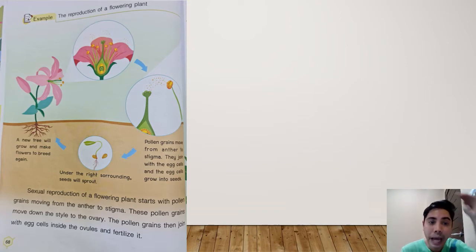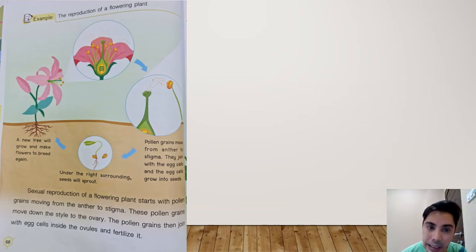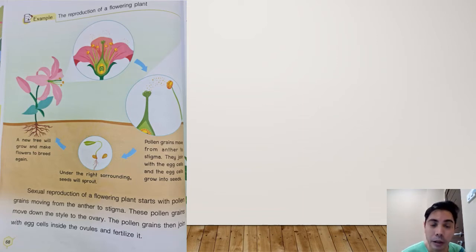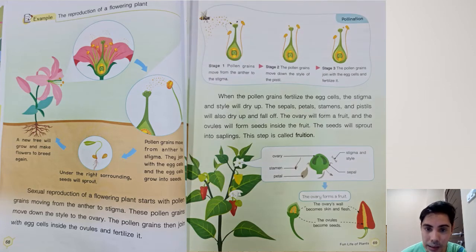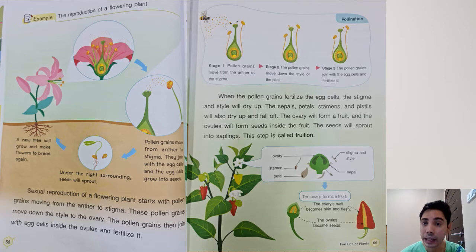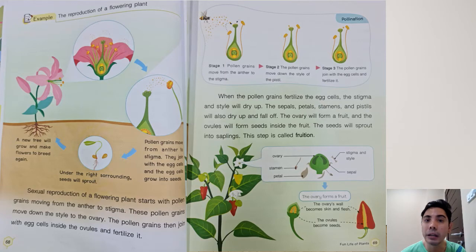These pollen grains move down to the style, to the ovary of the plant, and the pollen grains will then join with an egg cell. That egg cell inside the tummy of the flower will fertilize it to make it into a new plant. When the pollen grains fertilize the egg cells, the stigma and style will dry up, and the parts of the flower — the sepals, petals, stamens, and pistils — will also dry and fall down, and it will become a fruit.